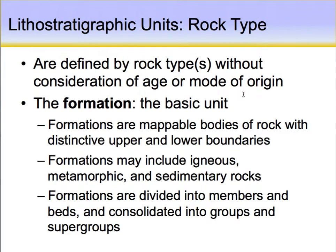Looking at lithostratigraphic units in more detail: these units are defined by rock types, and the base unit is the formation. Formations are mappable bodies of rock with distinctive upper and lower boundaries — a bedding plane that separates them from adjacent, subjacent, or superjacent formations. They can include igneous rocks, metamorphic rocks, and sedimentary rocks. We can divide formations into members and individual beds, or group them into broader groups or supergroups.